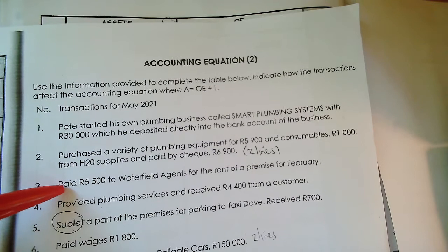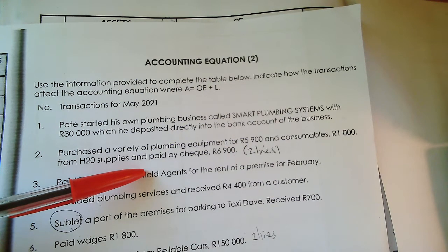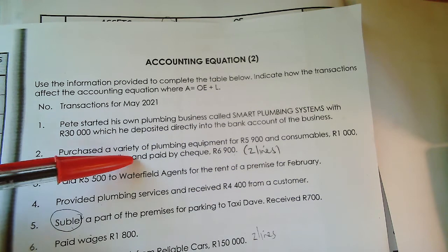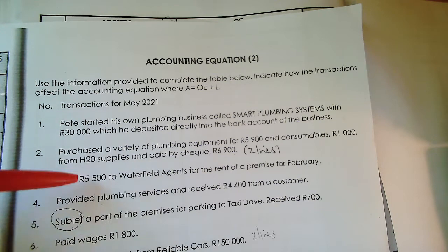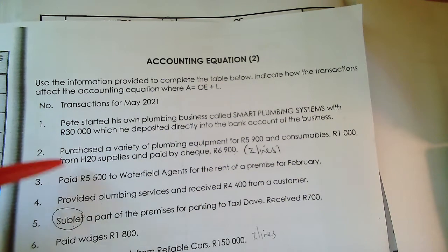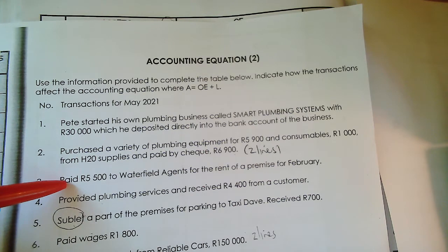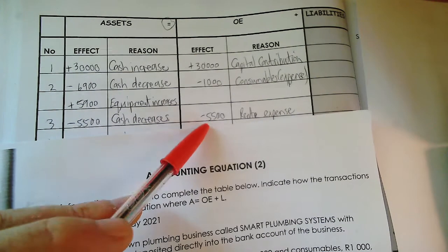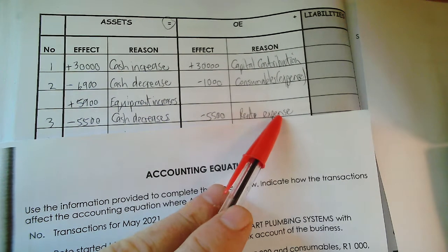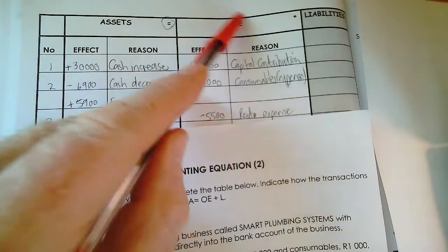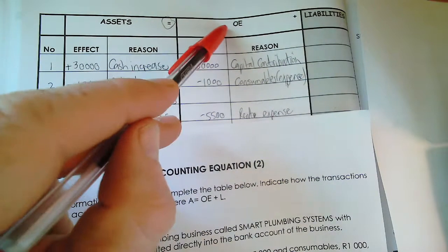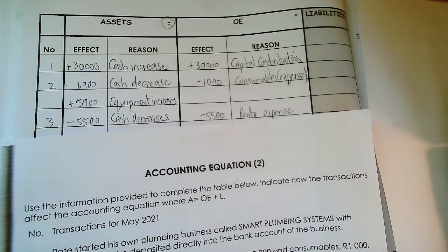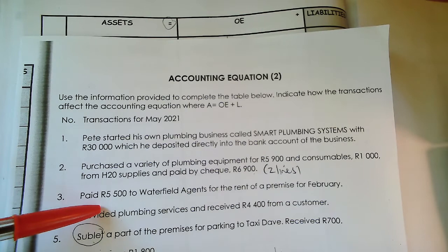Number three: paid R5,500 to Waterfield Agents for the rent of a premise for February. Because you are paying, it must be rent expense — not rent income. Ask yourself: am I paying or receiving? If you are paying, it is rent expense. So cash or bank decreases by R5,500, and rent expense — which is already under owners' equity — also decreases owners' equity by R5,500.